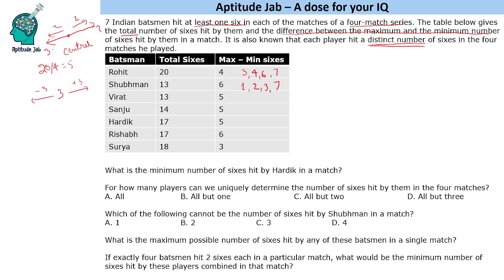For Virat with total thirteen and difference five: we can try one and six. If we try two and seven instead, we get a sum of nine and are left with four, but we cannot fit it into two remaining distinct values without repeating the minimum or maximum. So the values are one and six; we need six more from two values, and two plus four works, giving a total of thirteen.